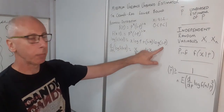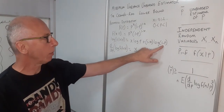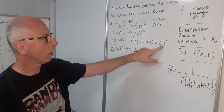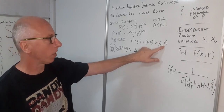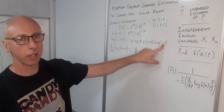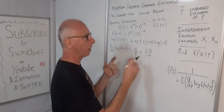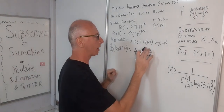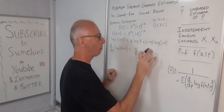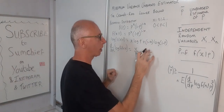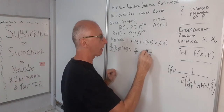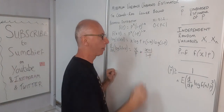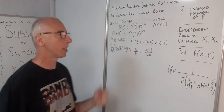Be careful here: when taking the derivative of log of 1 minus P, we get a minus sign, so we need to flip the signs. Therefore 1 minus X becomes X minus 1, and we can write it that way.